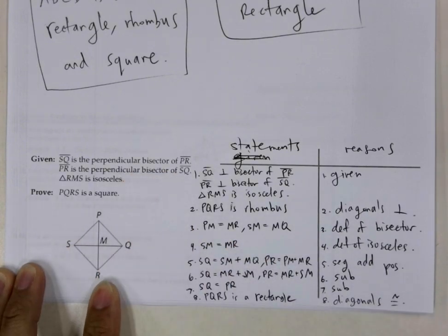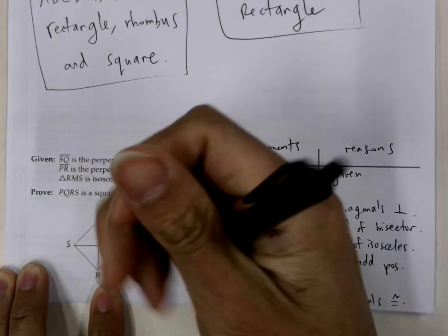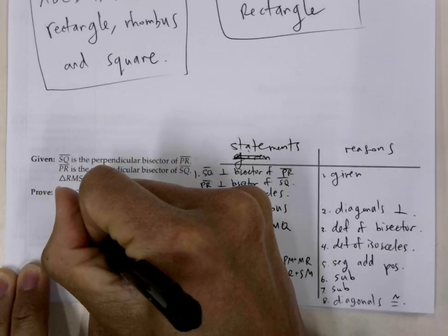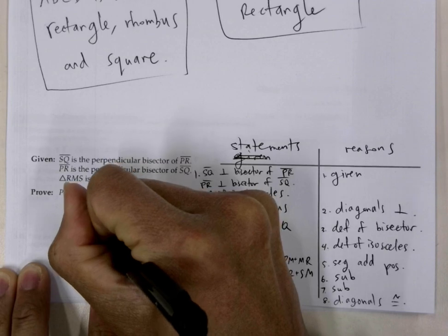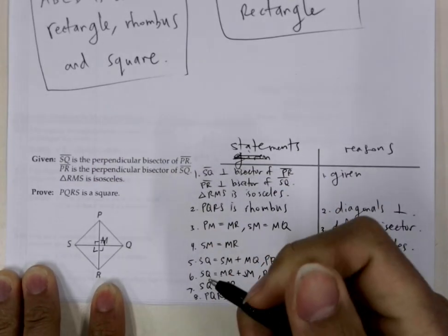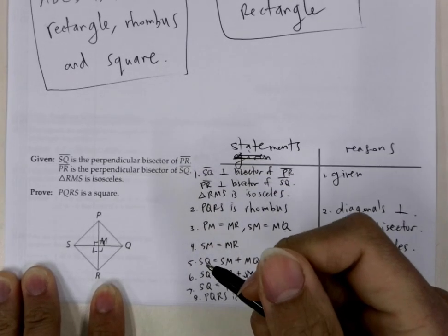So perpendicular bisector means two things. It means that the lines form right angles, so all of these angles are right angles. But it also means that it bisects the segment.